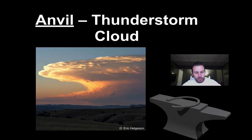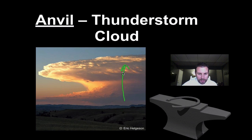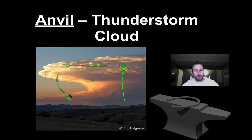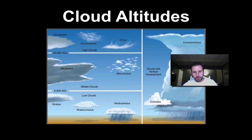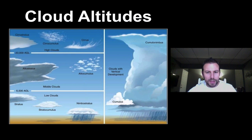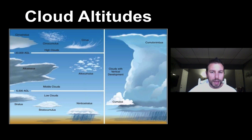Cumulonimbus clouds are interesting because there's a lot going on. We have our rising air, and then as it rises it comes outwards and then sinks, so we get these amazing downdrafts also associated with the clouds that are forming, giving them their characteristic shape. And there's just a cloud chart looking at the number of different clouds and the altitudes at which they are forming.